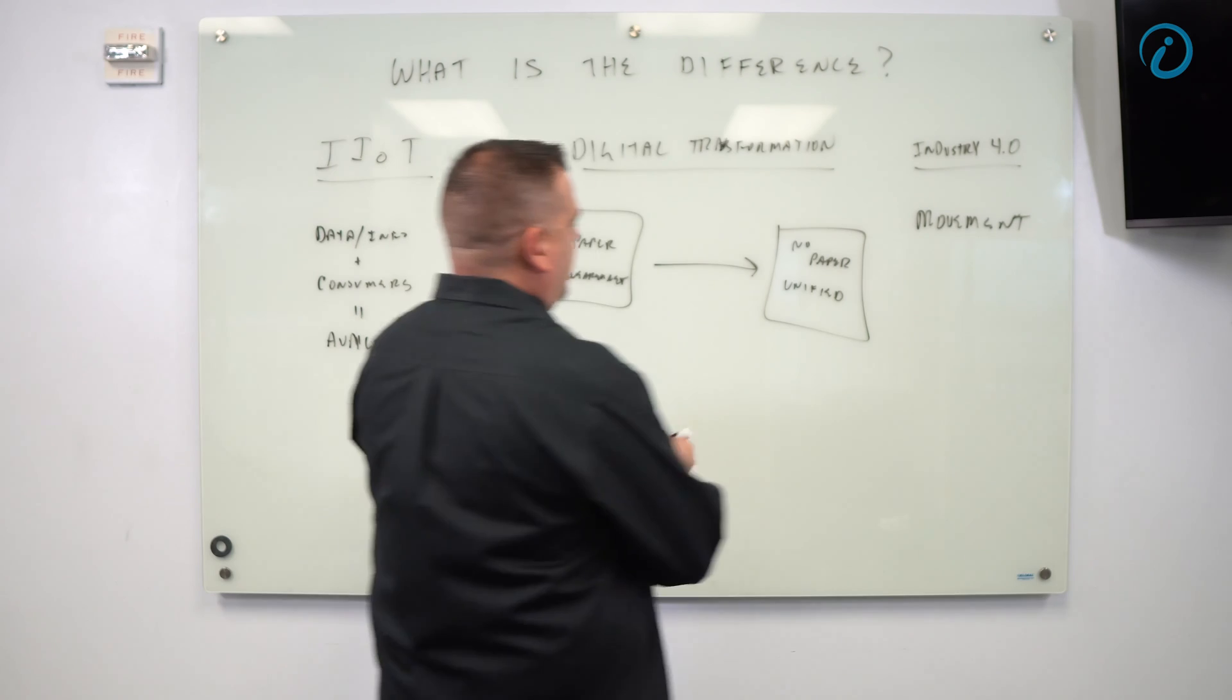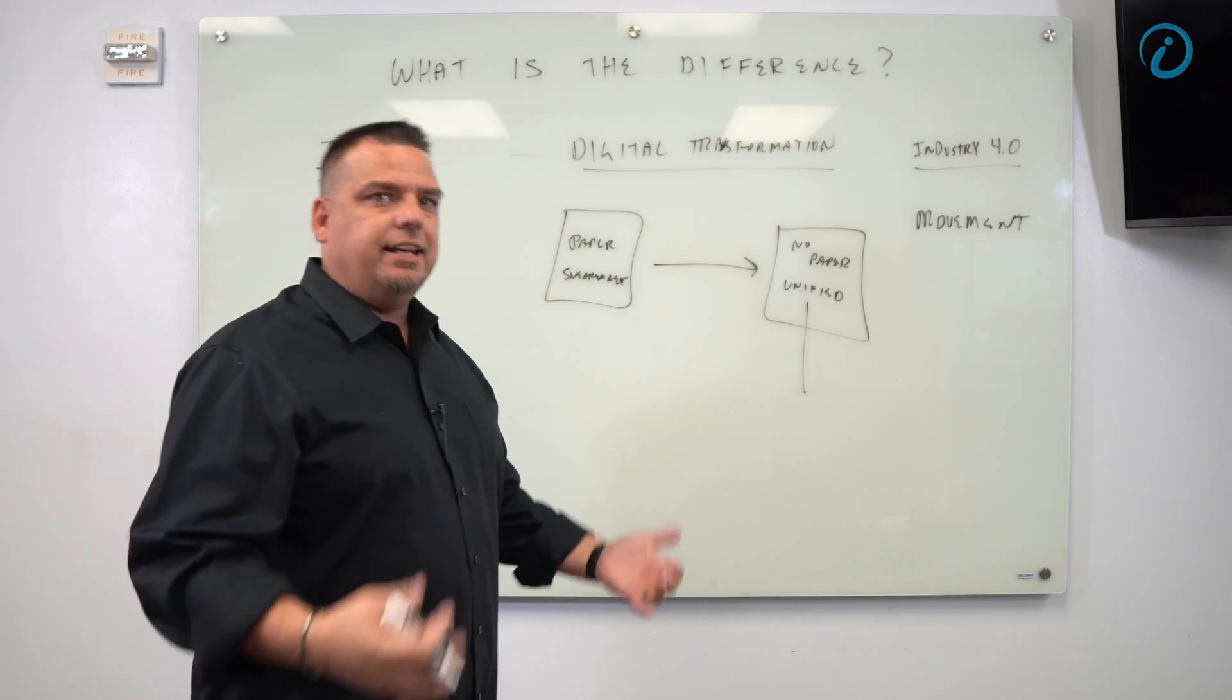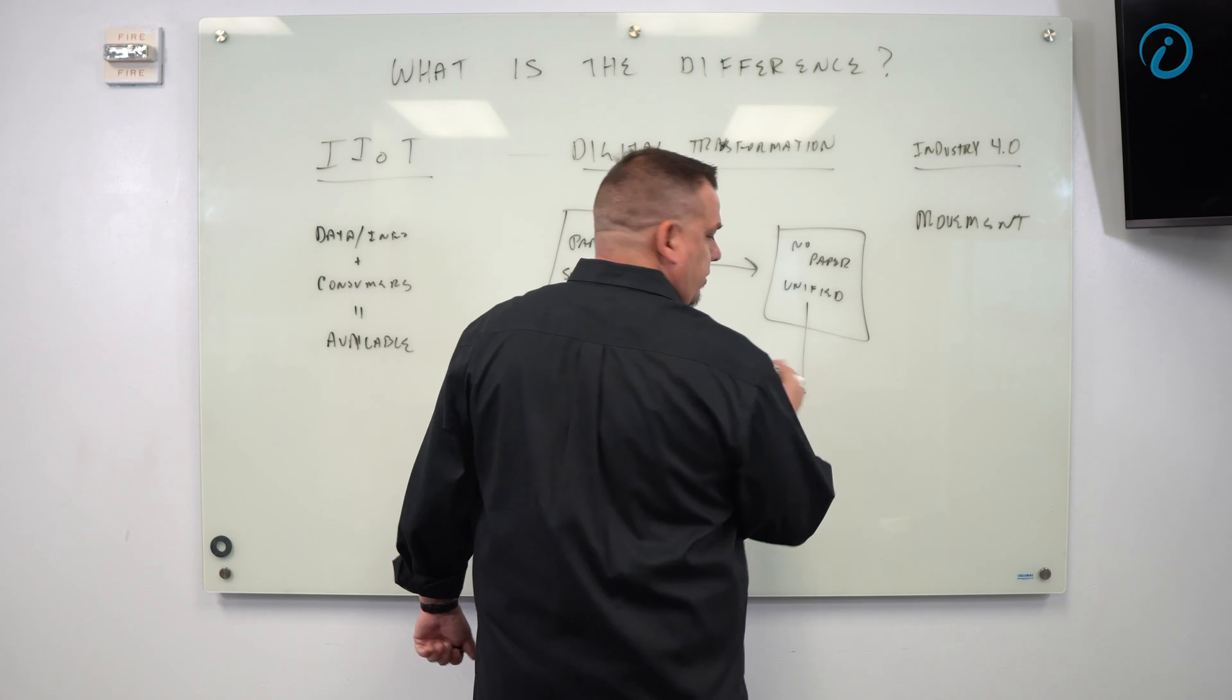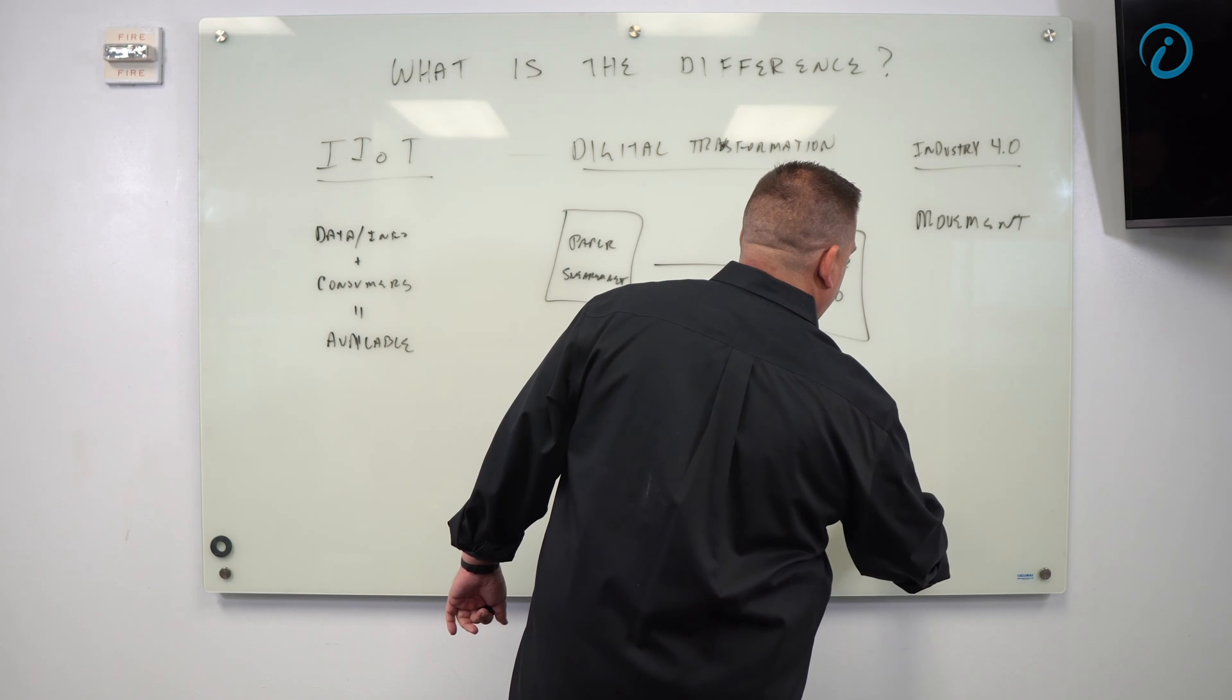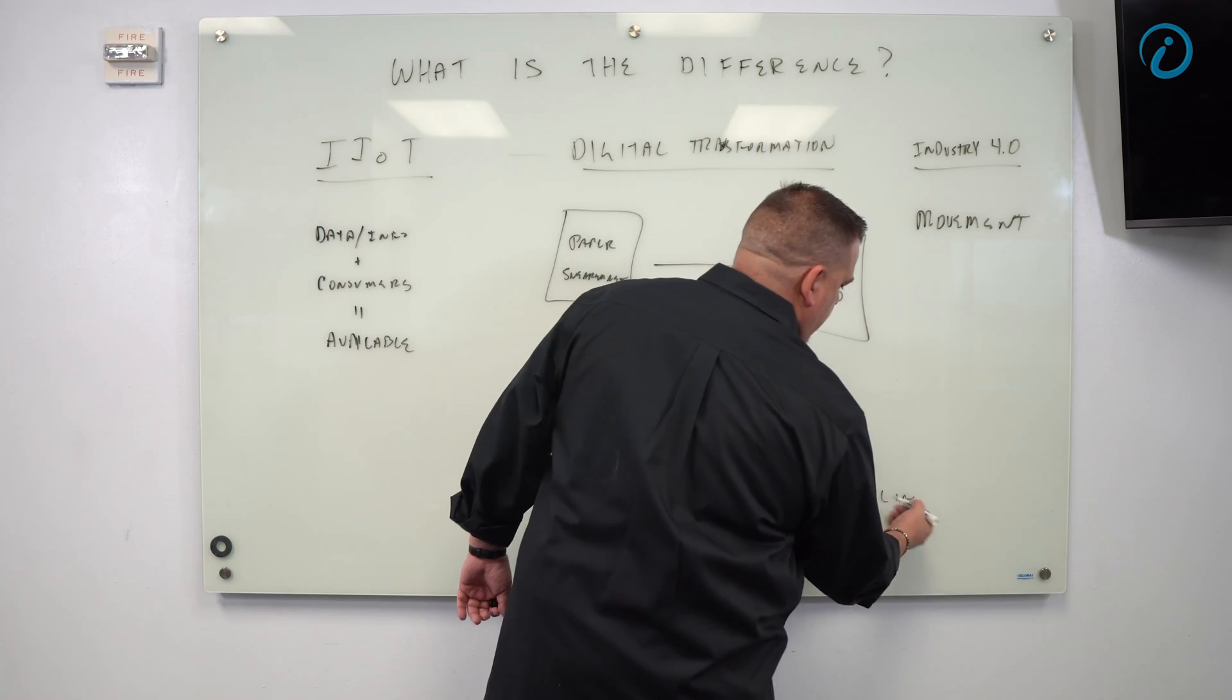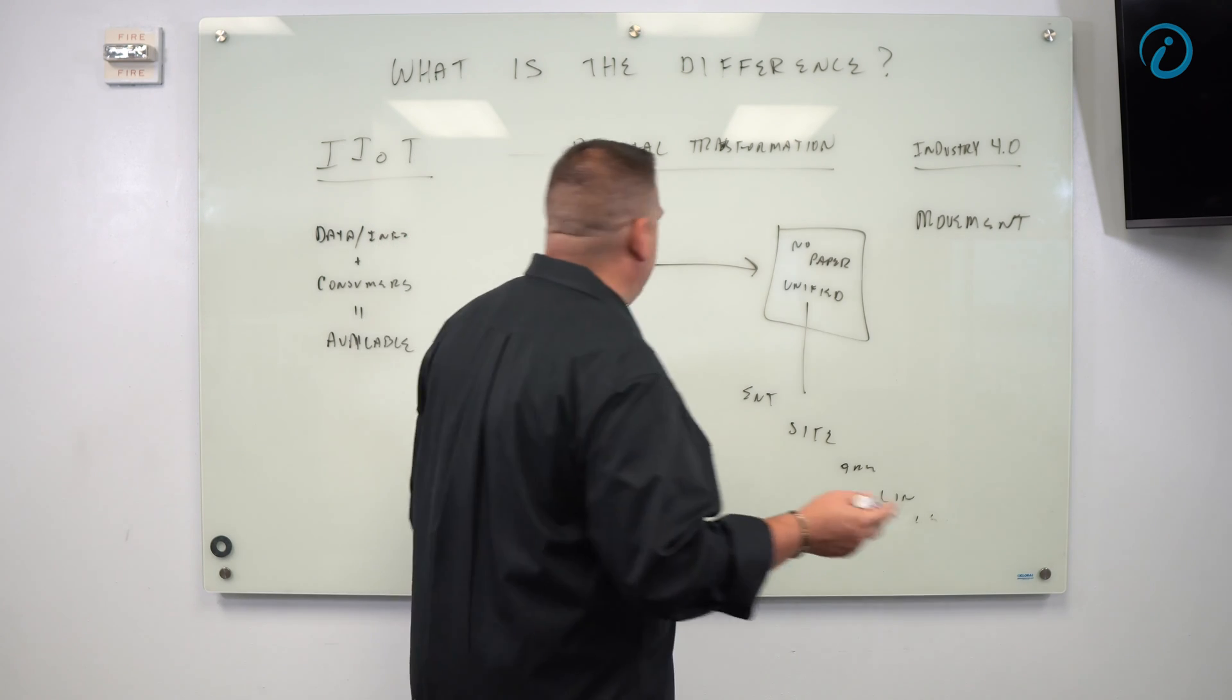When we talk about unified, we're talking about the unified namespace. We organize our data the way that we access it. We generally use the ISA 95 standard. So it's the enterprise, site, area, line, and cell. Each of these, there's a place in the namespace for all of our data. There's no data silos at all.